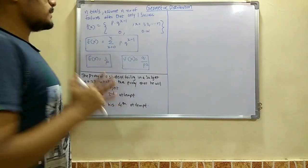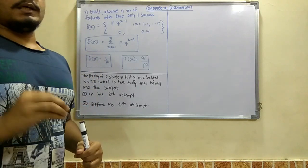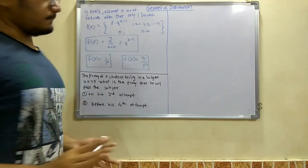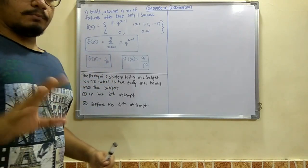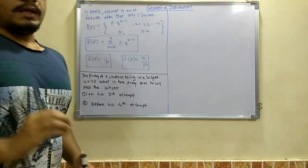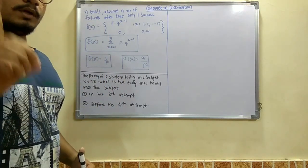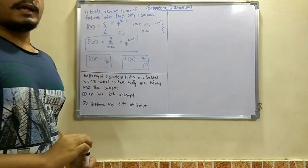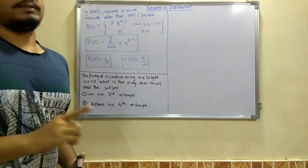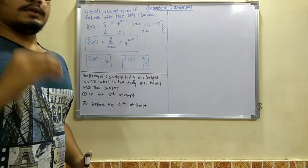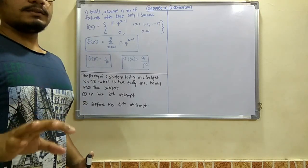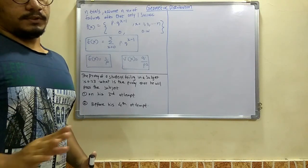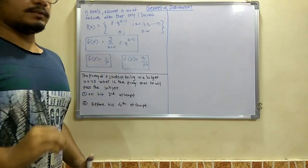First of all, in geometric distribution, the main concept is that there would be n number of trials given. You have to assume this n number of trials as the failures, and you will get success only at one attempt. Assume n number of failures are there, and after that you have only one success. It is like a student appears for a paper, he gets n number of failures, and finally he clears that subject. So that is the case in geometric distribution.